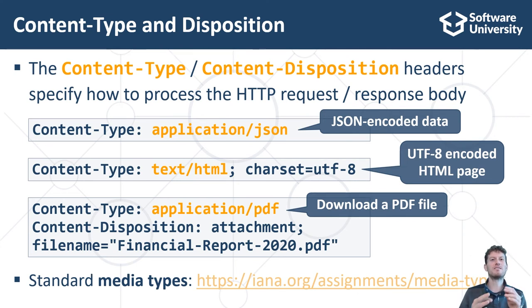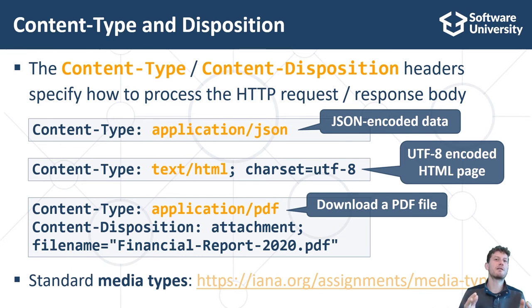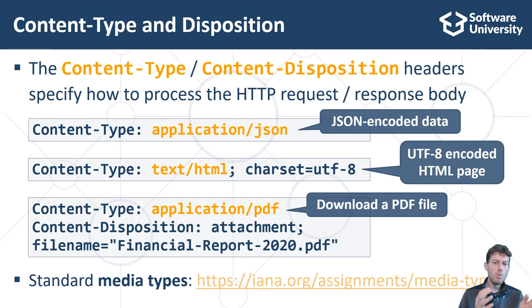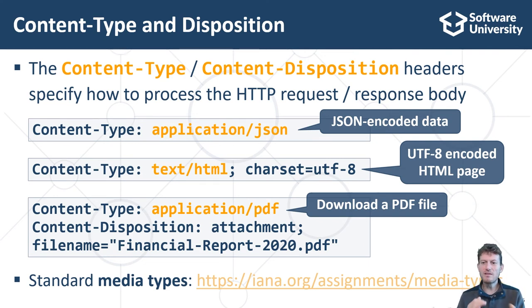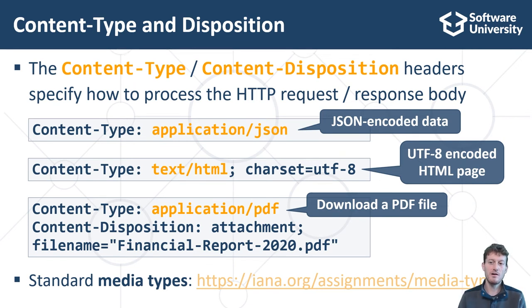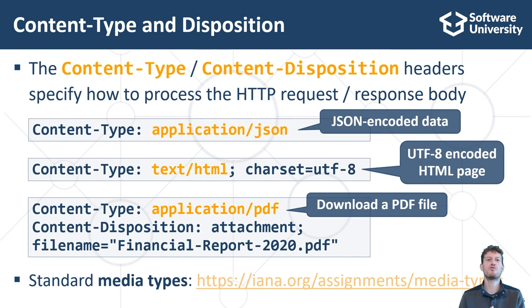The content-type header in HTTP responses specifies what kind of data the server returns to the client — for example, an HTML document or a JPEG image. For text-based data like HTML or text documents, the charset can also be specified, such as UTF-8 or Windows-1251. Specifying the character encoding explicitly is highly recommended and helps visualize the returned document correctly. By default, web browsers use the character encoding from the content-type response header when available, or their default encoding when the charset is missing.